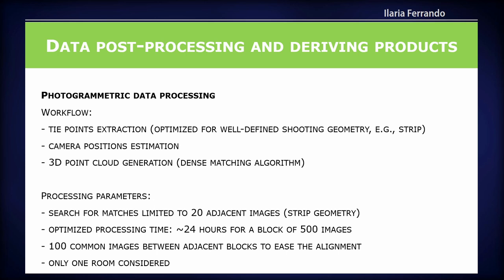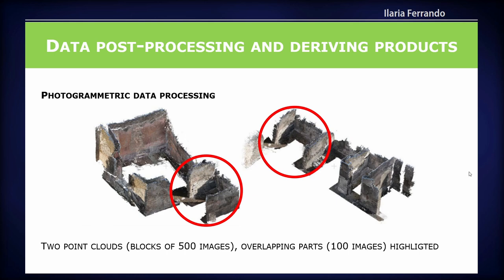For our case study, we limited the search of matches to 20 adjacent images because we have a strip geometry. We made tests to determine the best number of images to process together and found that 500 images is optimal, taking about 24 hours of processing. We chose to have 100 common images between two adjacent blocks to connect the blocks once processed, considering just one room for this example. Here you can see two blocks of 500 images each, with the common part formed by 100 images.